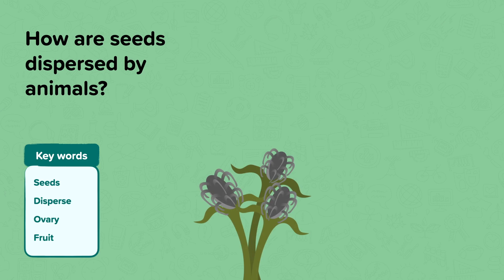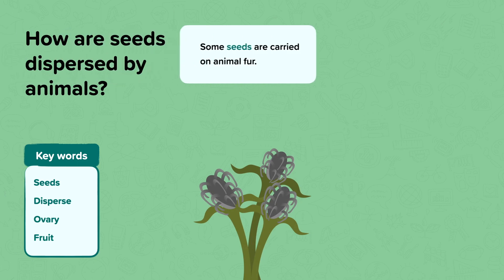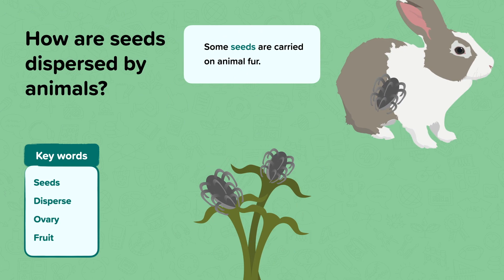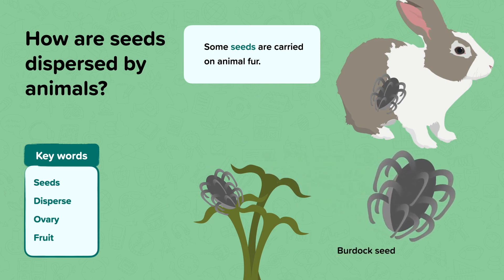There's also another way animals can help to disperse seeds. Some seeds are carried on animal fur. These seeds often have little hooks that mean they stick to animals as they brush past the plant. A burdock seed is a good example — it has hooks which help the seed attach to the fur of the animal. The seed then catches a ride away from the parent plant and will eventually drop off in a new location.